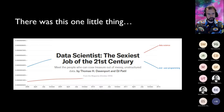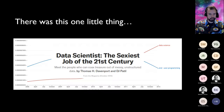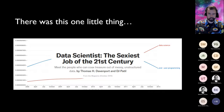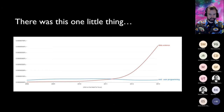End user programming trucked along at a relatively steady level of interest. Then starting in mid-2010, the phrase 'data science' started to get searched more and more. By late 2012, it had crossed over to become a more popular search term. October 2012, Thomas Davenport and DJ Patil put out an article in Harvard Business Review called 'Data Scientist: The Sexiest Job of the 21st Century.' Many of you will probably remember this phrase. By 2013, data science just continued to expand and expand.